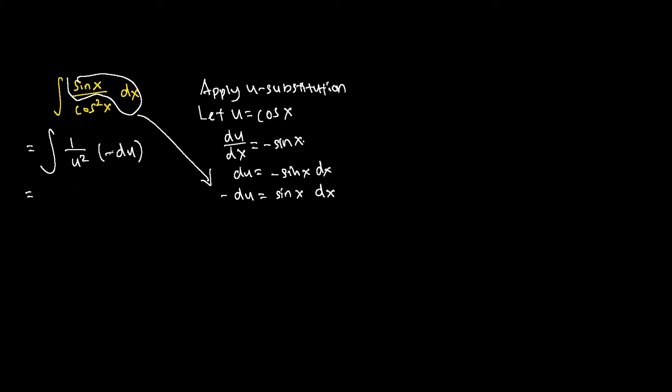Alright, we bring out the negative sign of the integral so we get negative integral of 1 over u squared du.